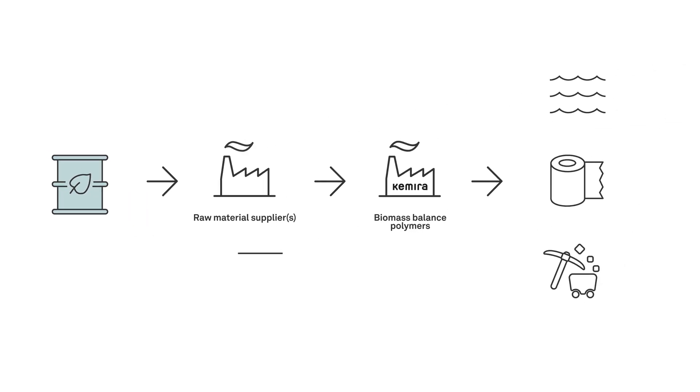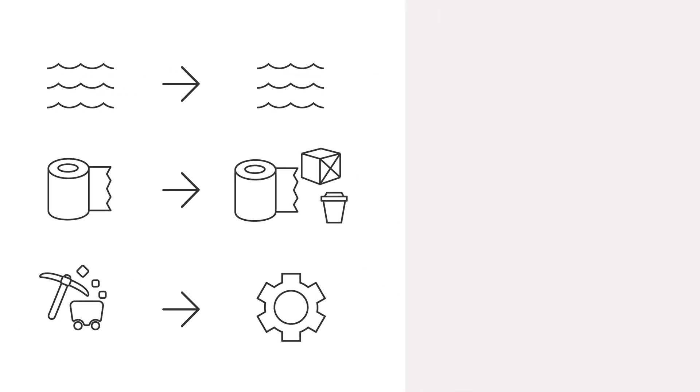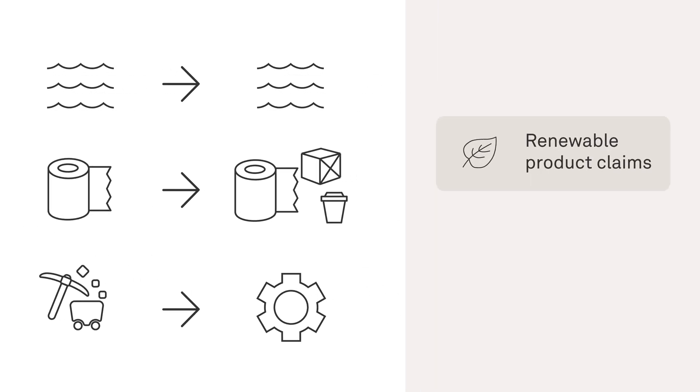We trace renewable material throughout the process and undergo independent audits so we can carry the ISCC plus certificate, so customers along the rest of the value chain can make renewable product claims and reduce the carbon footprint of their end products.